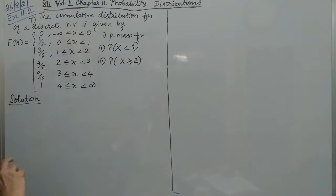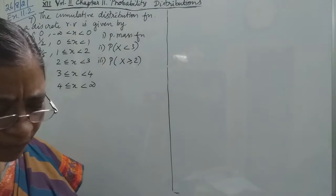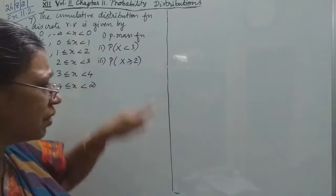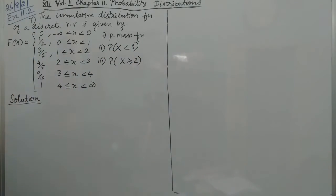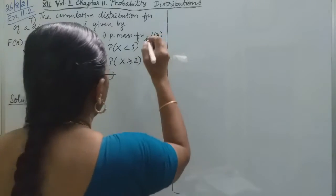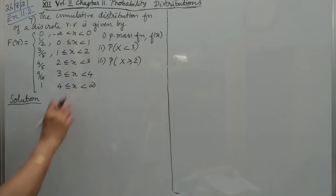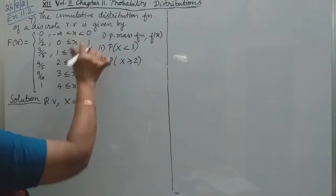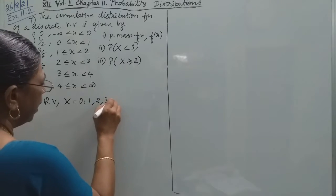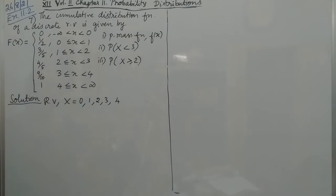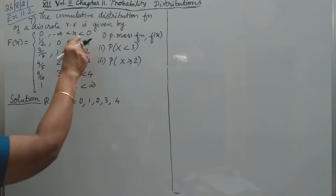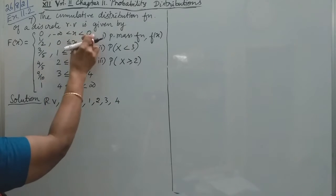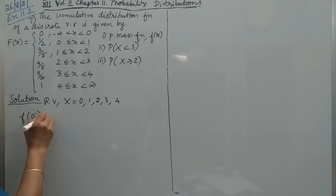The random variable means for discrete random variables, the values are 0, 1, 2, 3, 4. So 5 values.